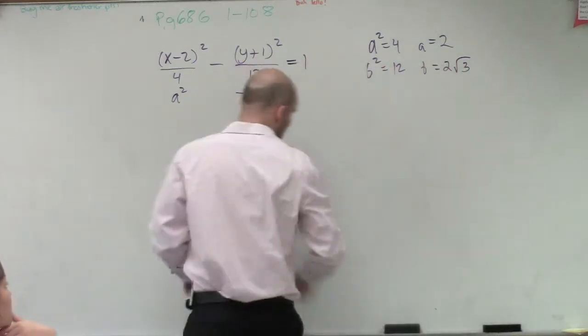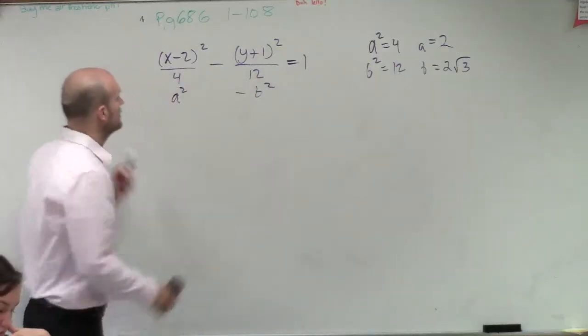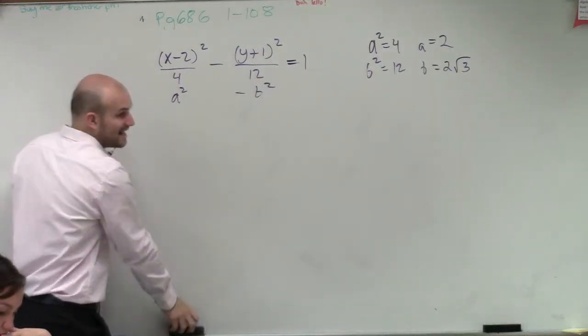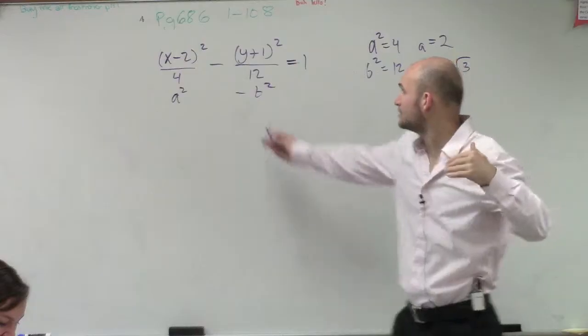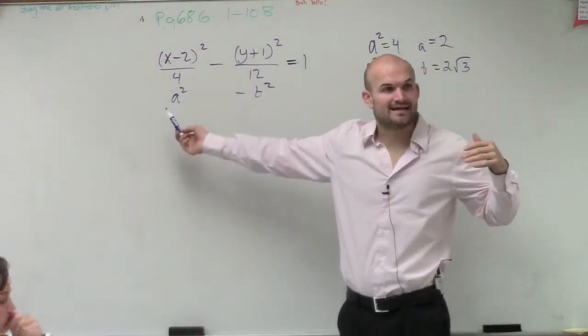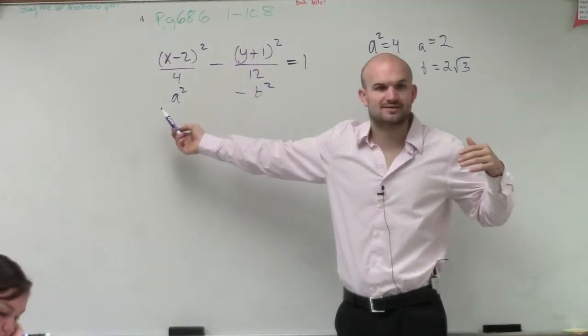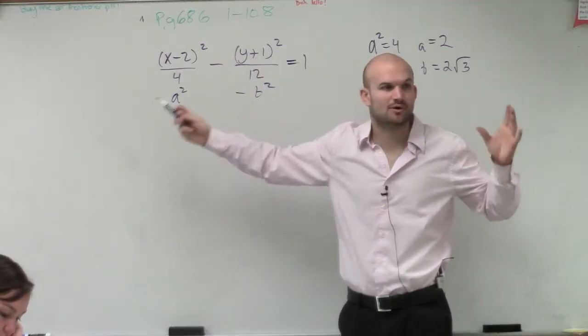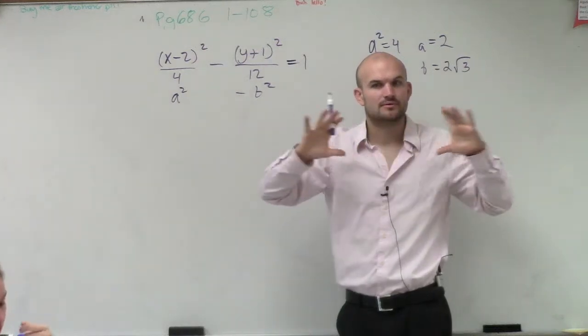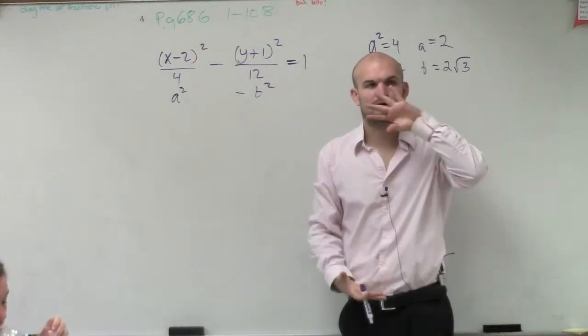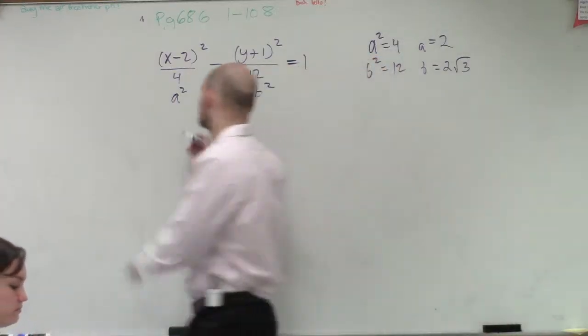But we're not going to be concerned about b anyways, because they're not asking us for b. But anyways, so now the next thing we need to know is if my graph has my x coordinate over my a, does that tell me if it's vertical or horizontal? What is my transverse axis going to be? What are my openings going to be? Horizontal or vertical? Horizontal. Horizontal.